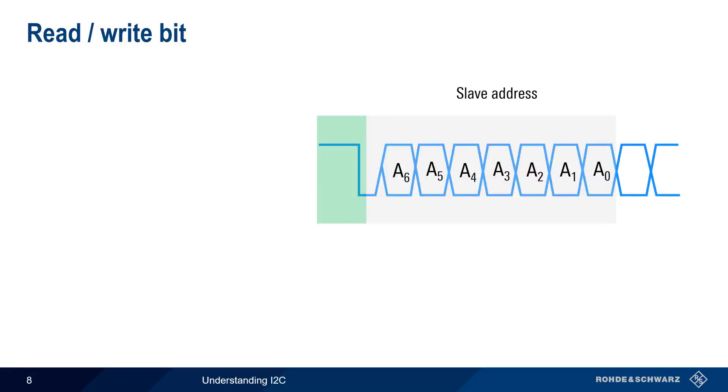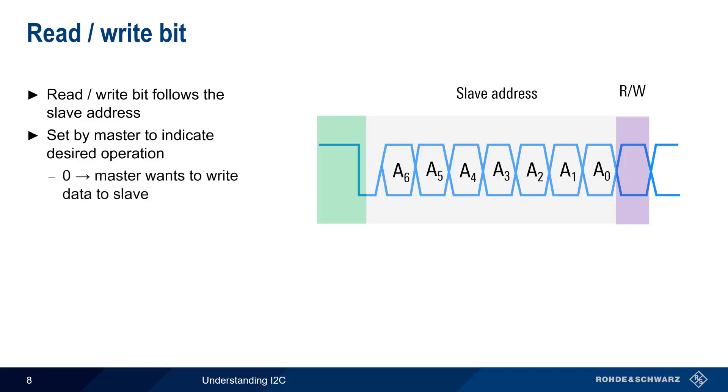Immediately following the slave address is the read-write bit. This bit is set by the master to indicate if it wants to perform a read or a write operation. If set to 0, this means that the master wants to write data to the slave. And if set to 1, it indicates the master wants to read data from the slave. Recall that the standard slave address in I2C is 7 bits long. And in many cases, the read-write bit is decoded or interpreted as part of the address byte.